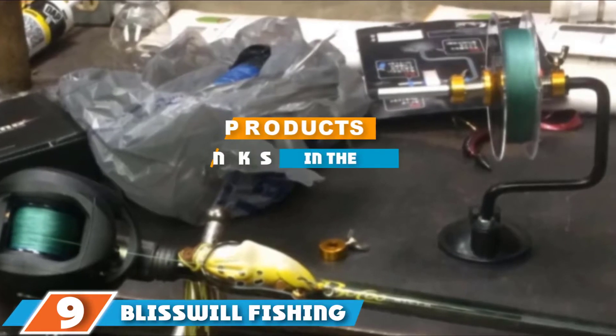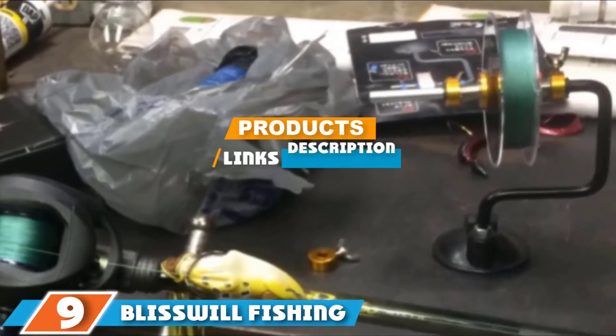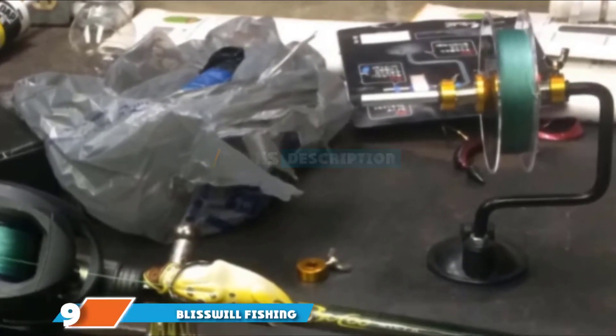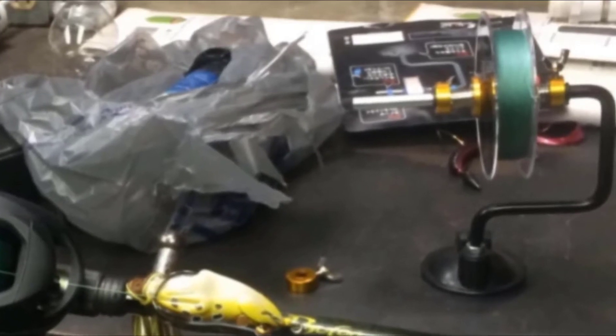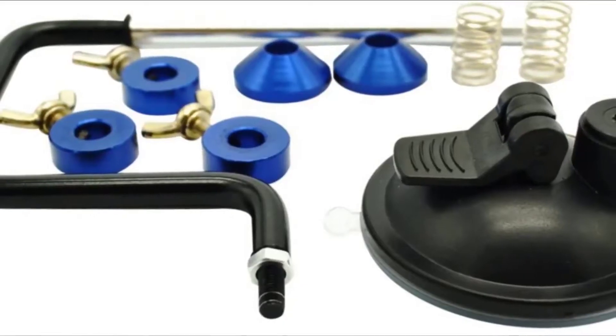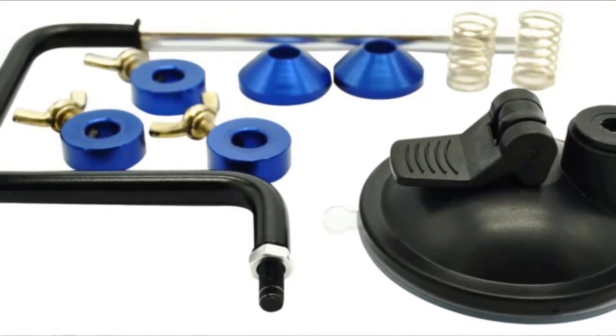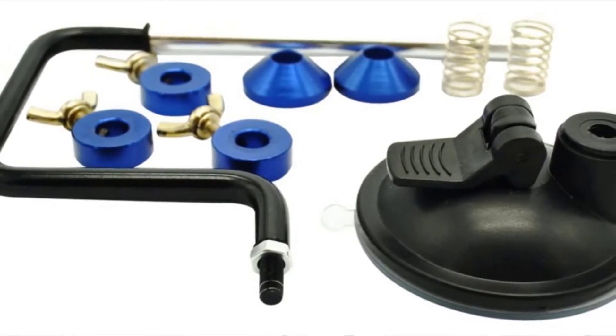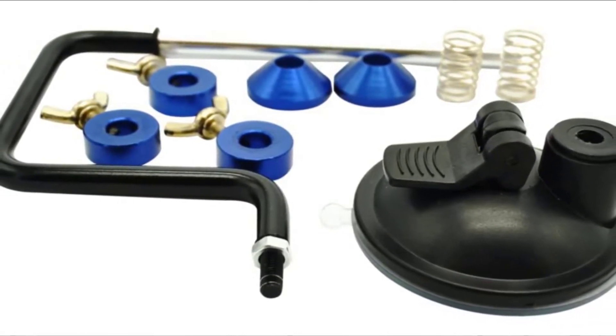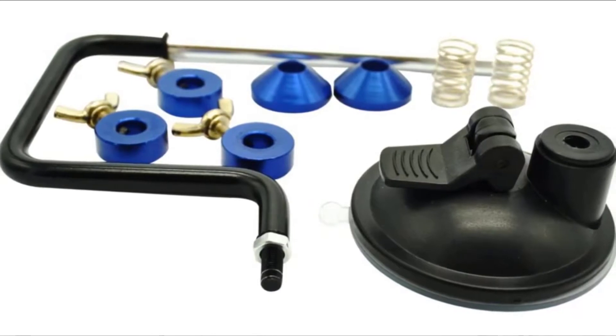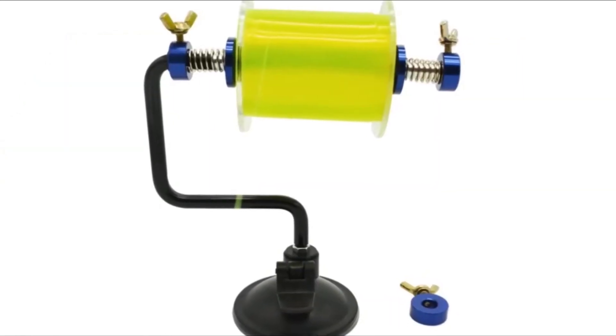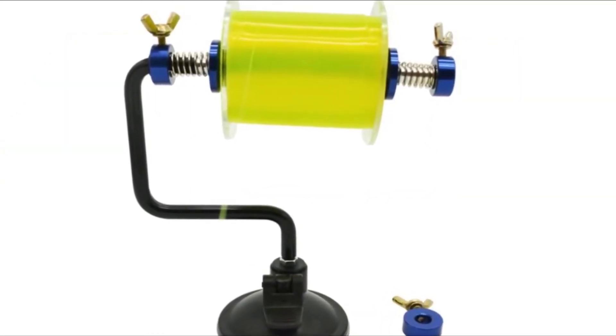Moving on to the next, at number nine we have Buswell fishing line spooler. Fitted with fastening springs and adjustable clamp force, the Buswell fishing line spooler offers the ultimate tightening control of the line. The fishing line spooling machine incorporates a weather resistant, rust free, and no crack aluminum alloy construction aptly thought out for its function.